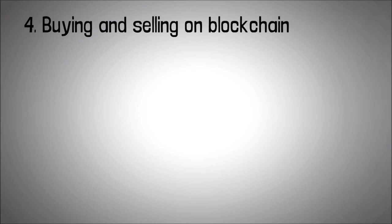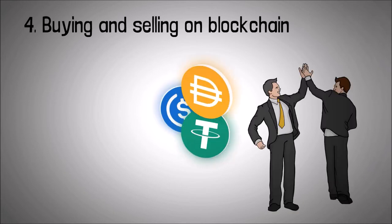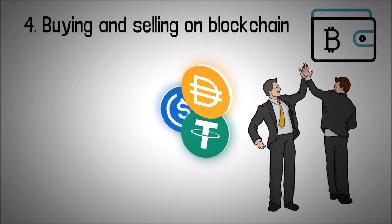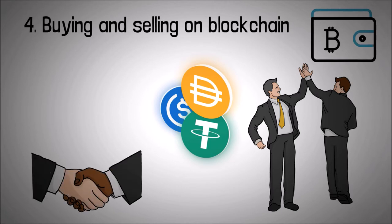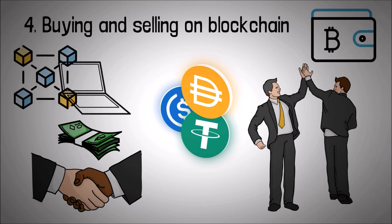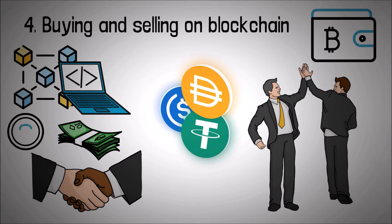4. Buying and selling on blockchain. Stablecoins are exactly what you need if you want to store your capital in the crypto world without any price volatilities. Stablecoins are used to buy, sell, and trade cryptocurrencies on different exchanges, get involved in the tokens of decentralized applications and decentralized finance, and even play blockchain-based games.